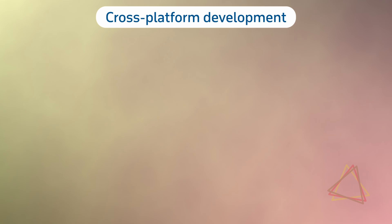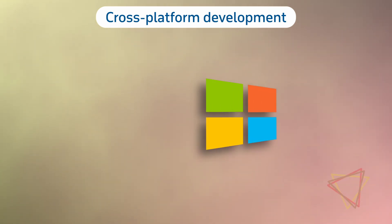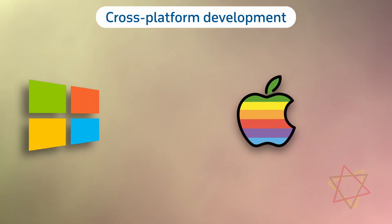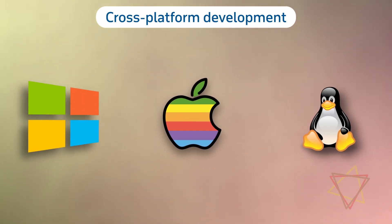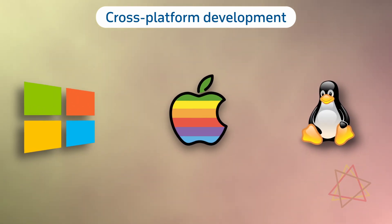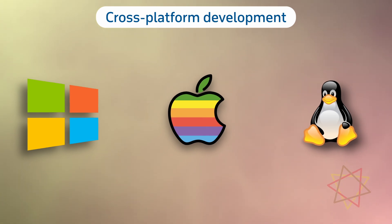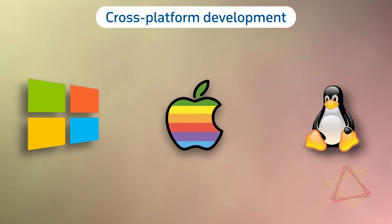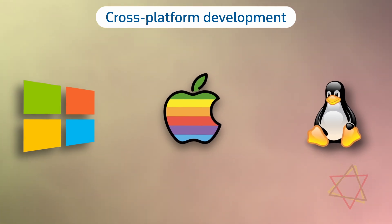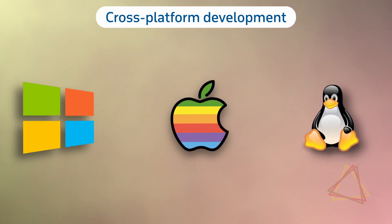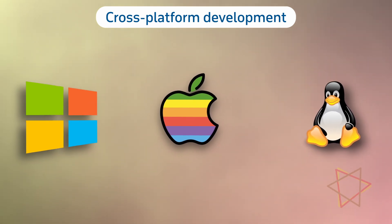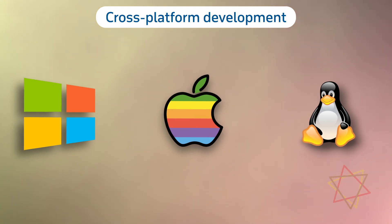Reason number two: cross-platform development. Rust is designed to run on Windows, macOS, and Linux with no need for platform-specific code. If you're working on applications that need to work seamlessly across operating systems, Rust has got you covered.